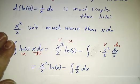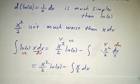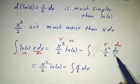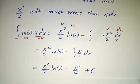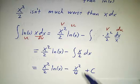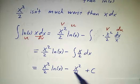And the integral of v du is a pretty simple integral. You know, x squared over 2 times dx over x is just x over 2 dx. And you know how to do that integral. It just gives you x squared over 4. We've got the minus sign.